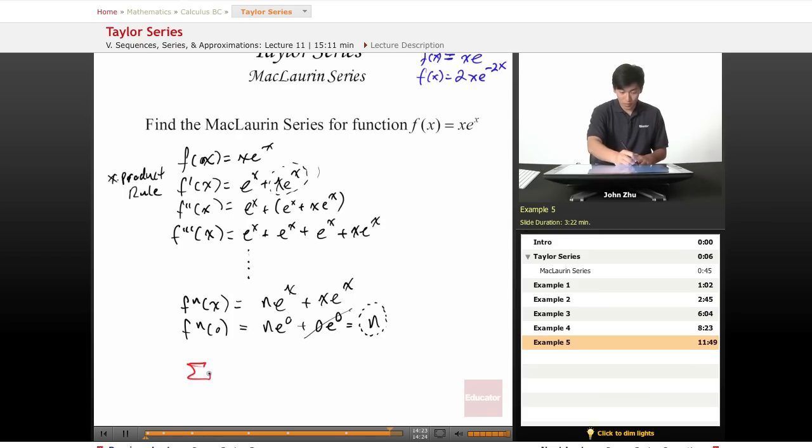So n equals 0 to infinity, we get x to the n over n minus 1 factorial.